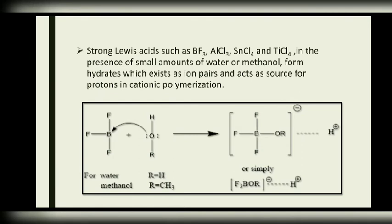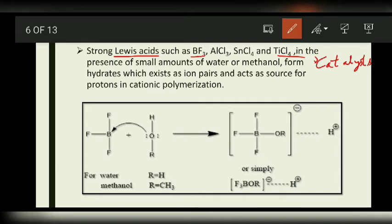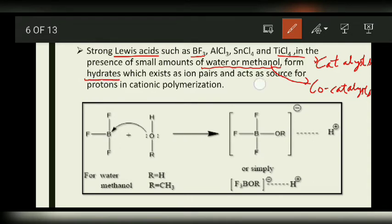The protons or positive ions can be obtained from strong Lewis acids such as BF3, AlCl3, SnCl4, and TiCl4. These are known as catalysts. These strong Lewis acids in the presence of small amounts of water or methanol — known as co-catalysts — form hydrates, which act as the source for protons in cationic polymerization.